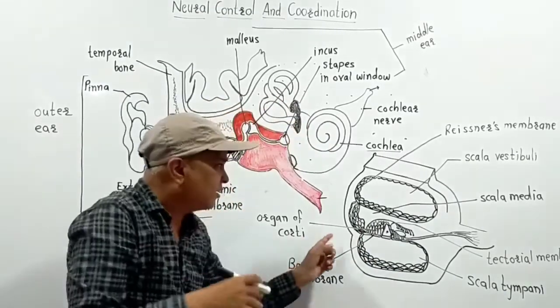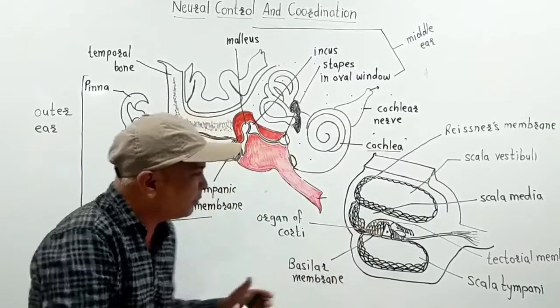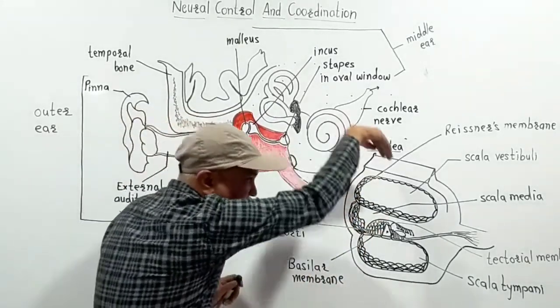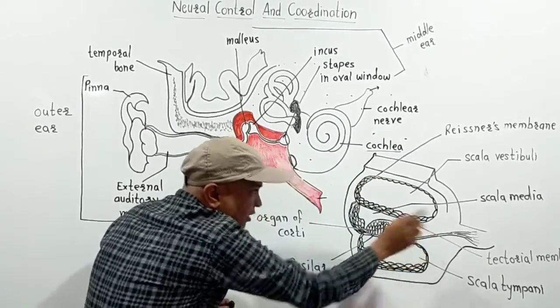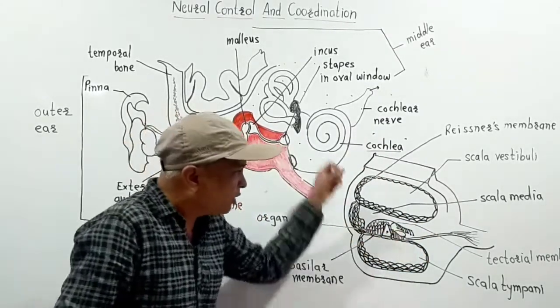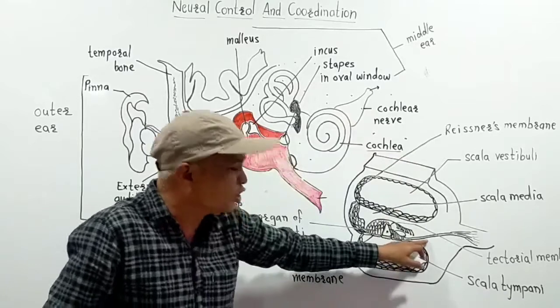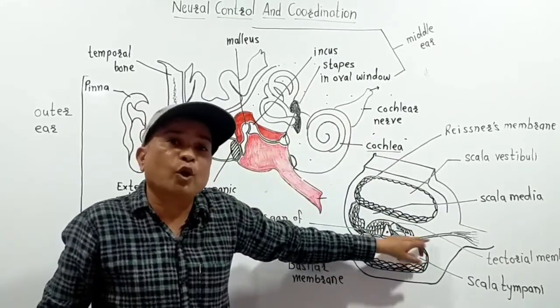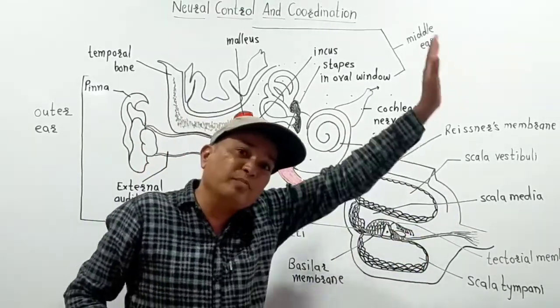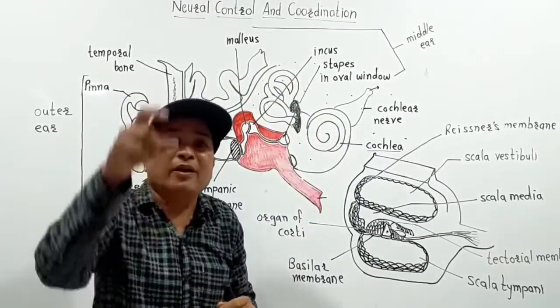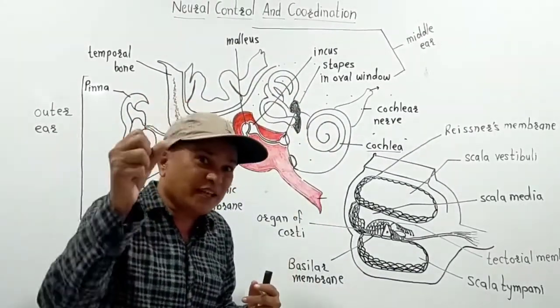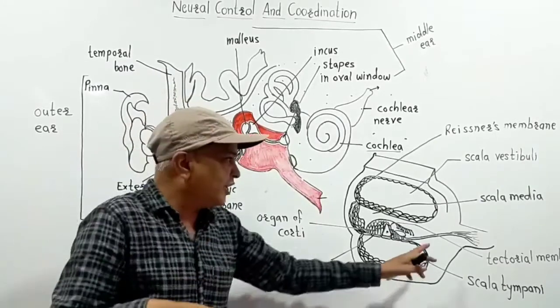Again, that is against the tectorial membrane. As it is pressed here, similarly here forward, it will touch here, and through this nerve, the auditory nerve. Now the stimulus is given to this auditory nerve. The auditory nerve carries that impulse into the brain, to different auditory areas of the brain, where the impulse is received, the signal is received.